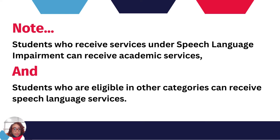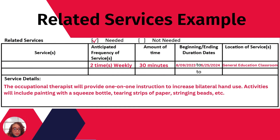Students who receive services under speech language impairment can receive academic services, and students who are eligible in other categories can receive speech language services. Here's an example of what related services may look like in a student's IEP on the services page — it has the anticipated frequency of service, the amount of time, the beginning and end dates, and the location of the service. The service detail section is very specific on what the service will be provided by the occupational therapist.